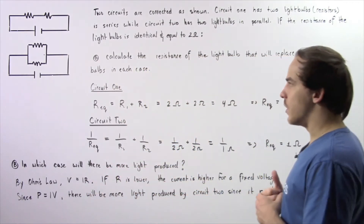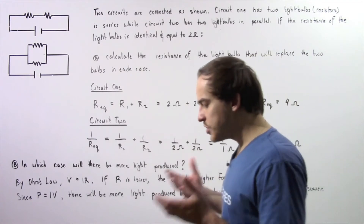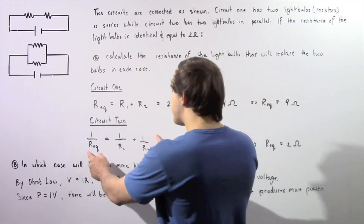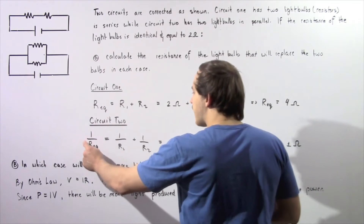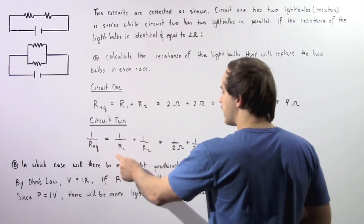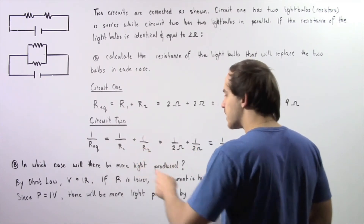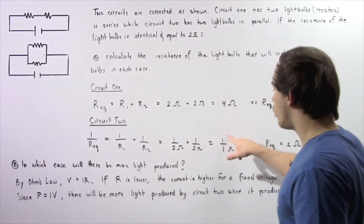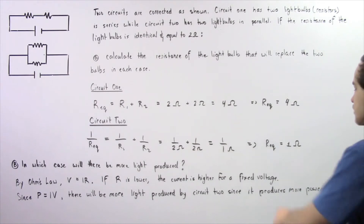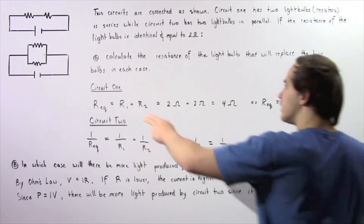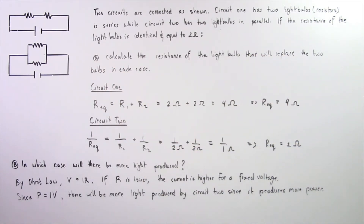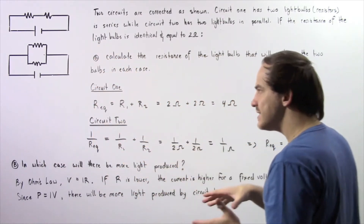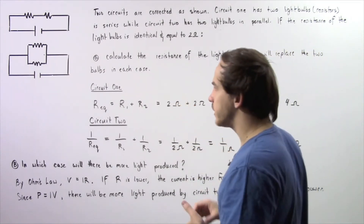Now let's move on to electric circuit number two, where we have two light bulbs connected in parallel. To find the equivalent resistance, we use the equation: one divided by the equivalent resistance equals one divided by R1 plus one divided by R2. Since R1 equals R2 equals two ohms, one half plus one half gives one divided by one, so the equivalent resistance for electric circuit number two is one ohm — less than that of circuit number one.